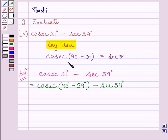Now, from the key idea, we know cosec(90 - θ) equals sec θ. Here, cosec(90° - 59°) equals sec 59°, where theta is 59 degrees.